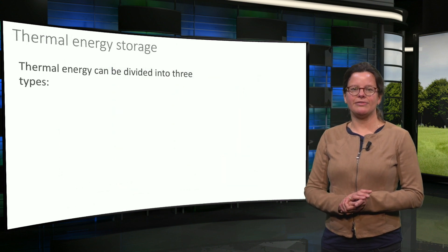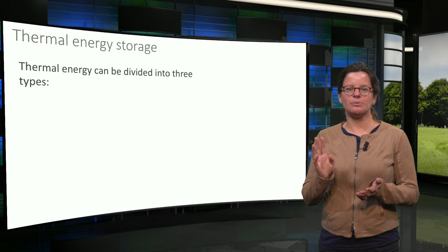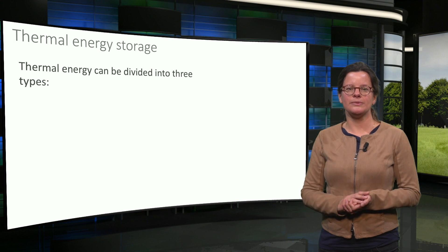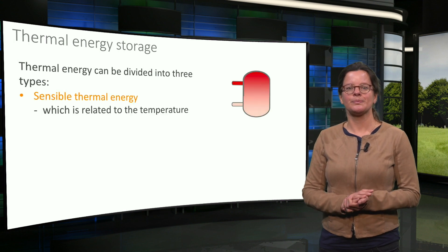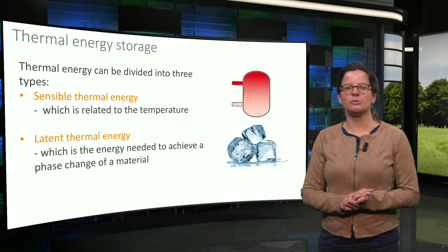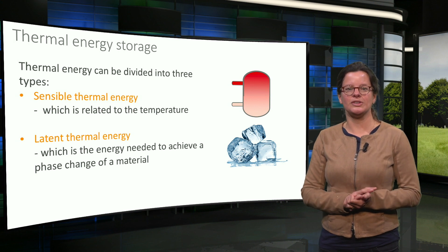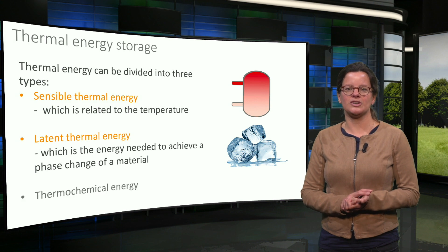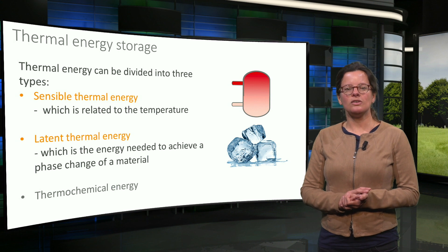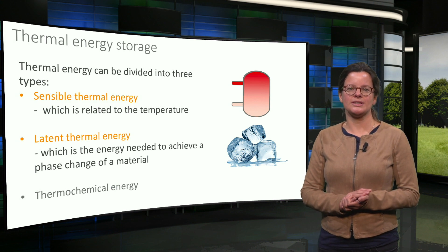Thermal energy can be divided into three types: sensible thermal energy, which is related to the temperature; latent thermal energy, which is the energy needed to achieve a phase change of a material; and lastly, thermochemical energy, which is the storage of thermal energy in chemical bonds. In all these cases, the energy transferred to and from the storage system happens by heat.